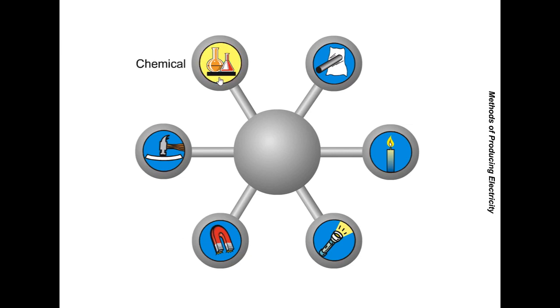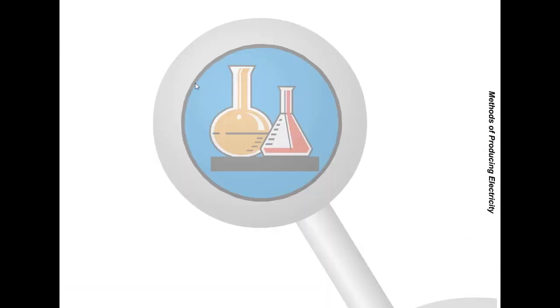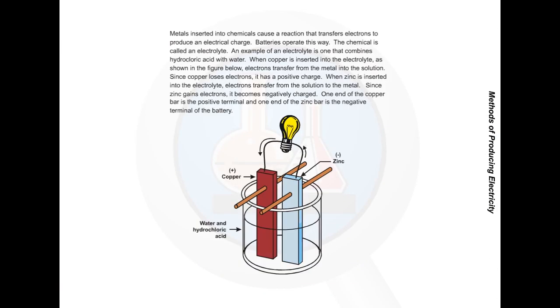Chemical. Metals inserted into chemicals cause a reaction that transfers electrons to produce an electrical charge. Batteries operate this way. The chemical is called an electrolyte.